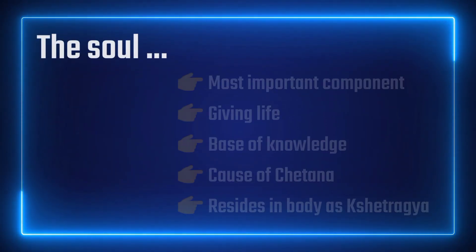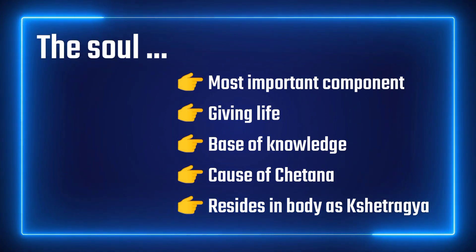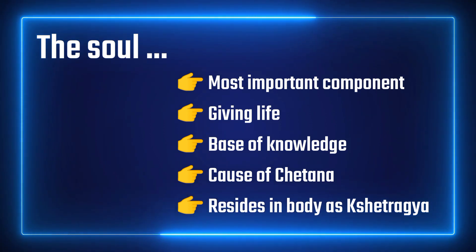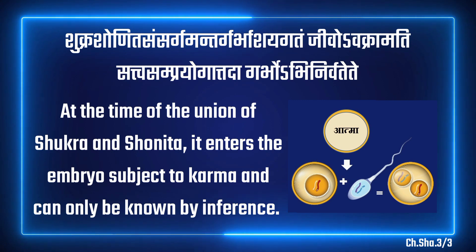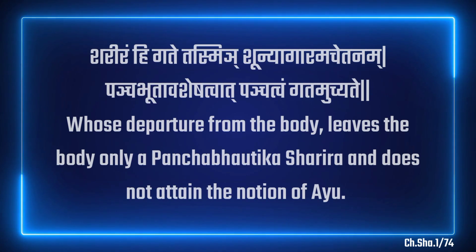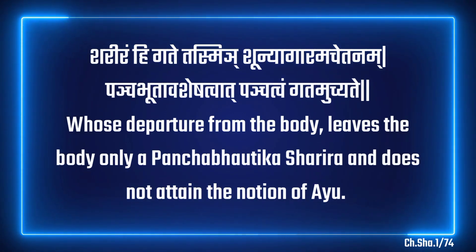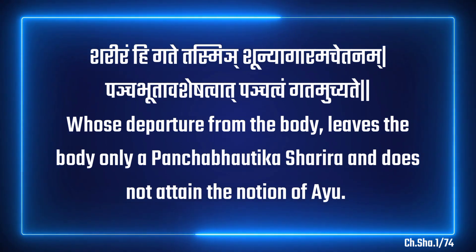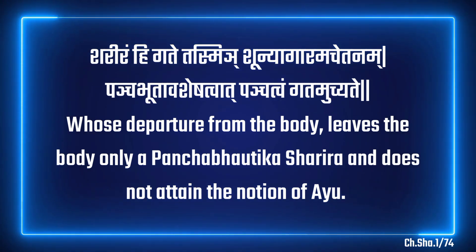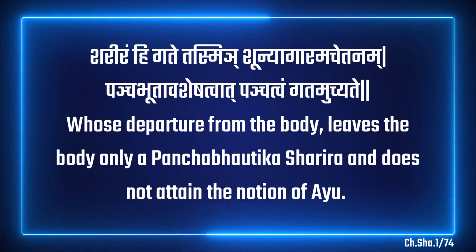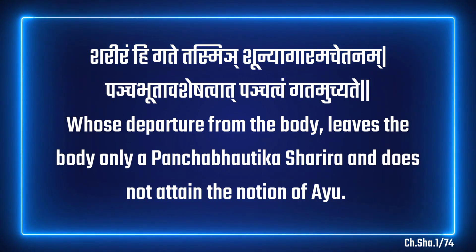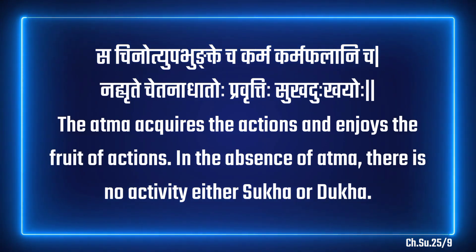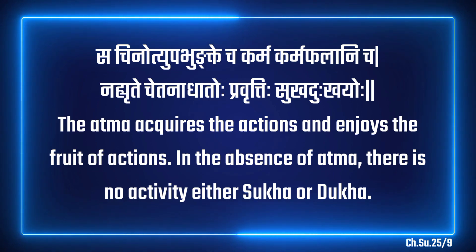Atma is the most important among all the components of the body — giving life to the body, the base of knowledge, the cause of Chaitana, and residing in the body as Kshetrajya. At the time of union of Shukra and Shonit, it enters the embryo subject to karma and can only be known by inference. Maharshi Charak emphasises the presence of Atma by saying: Chariram hi gatetasmin sunyagaram achetanam Pancha bhutavase shattvat Panchtvam gata muchyate — whose departure from the body leaves the body only a Panch-bhautik-sharira. The Atma acquires action and enjoys the fruit of action. In the absence of Atma, there is no activity, neither Sukh nor Dukh.